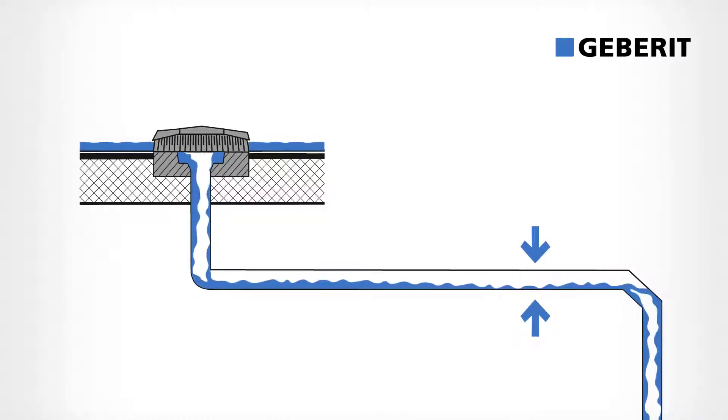Smaller pipe diameters, which fill completely in the event of heavy rain, result in a closed water column. The water is then suctioned off the roof with negative pressure.